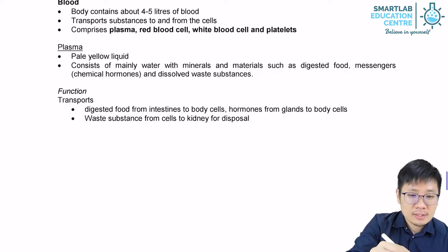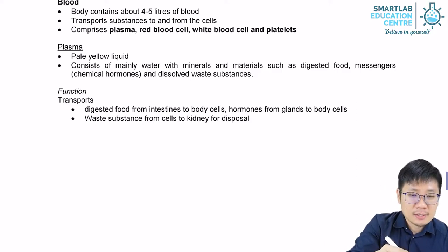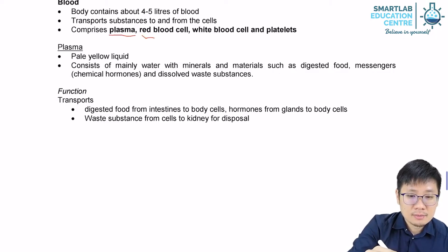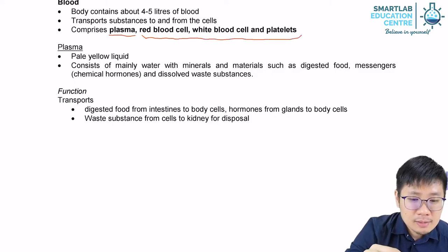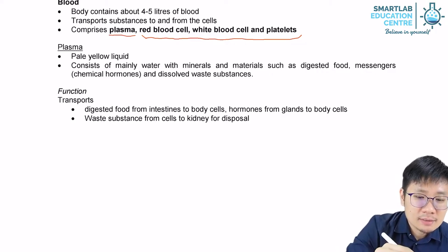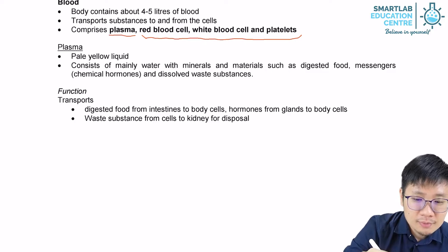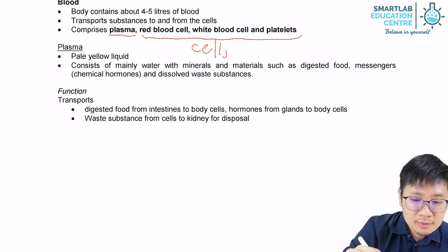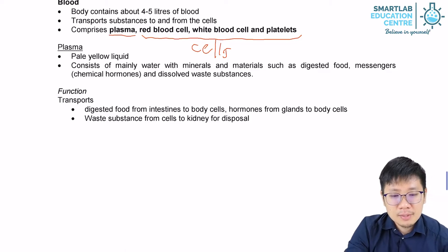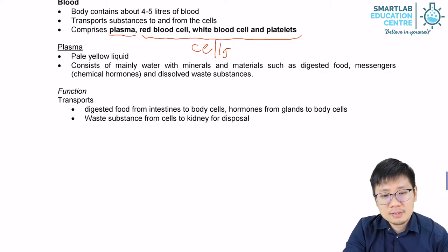Blood comprises plasma, red blood cells, white blood cells, and platelets. Plasma alone is what we call the acellular component — that means no cells. The cellular part consists of red blood cells, white blood cells, and platelets.